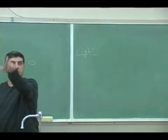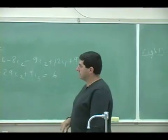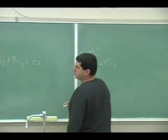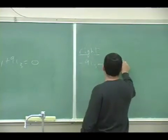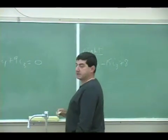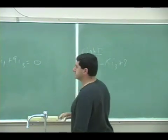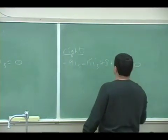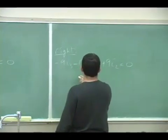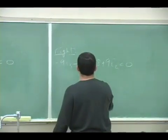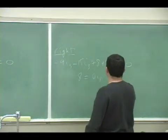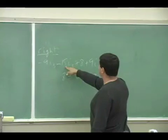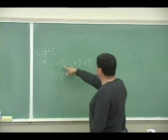The right loop is going to be — again, every current in the right loop will be negative: negative 9I3, negative 15I3, and the battery is going to be plus 8. But you have to remember you're going against I2. So this becomes: 8 is equal to — I1 is not even involved — negative 9I2 goes to the other side, and then 15I3 and 9I3 gives 24I3.